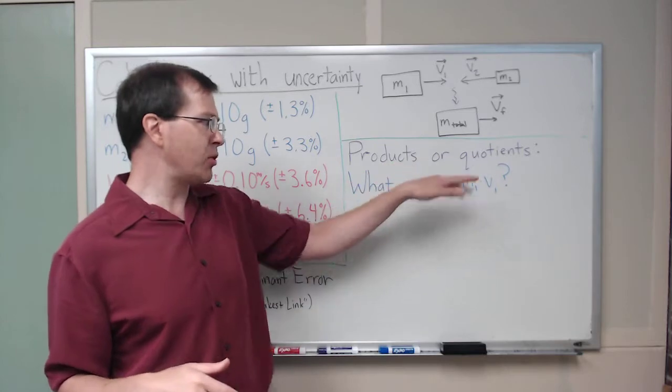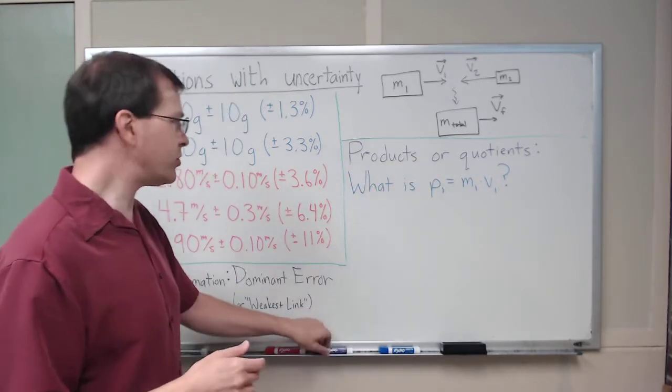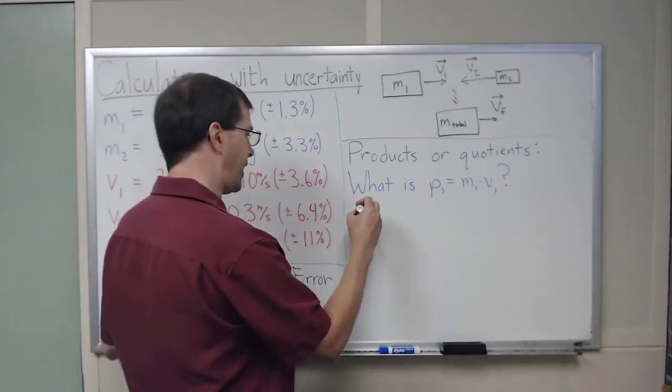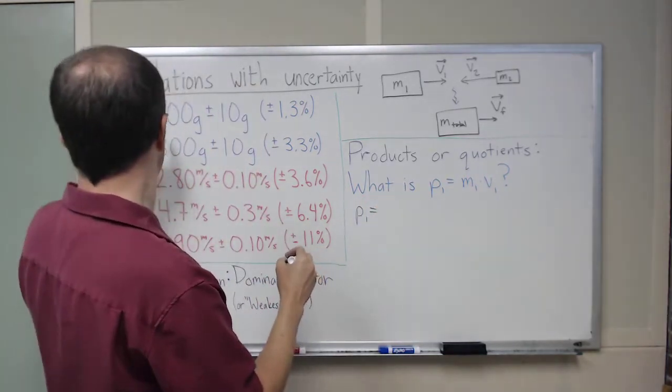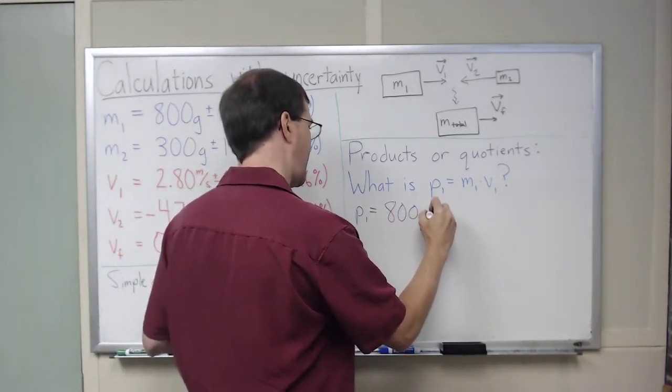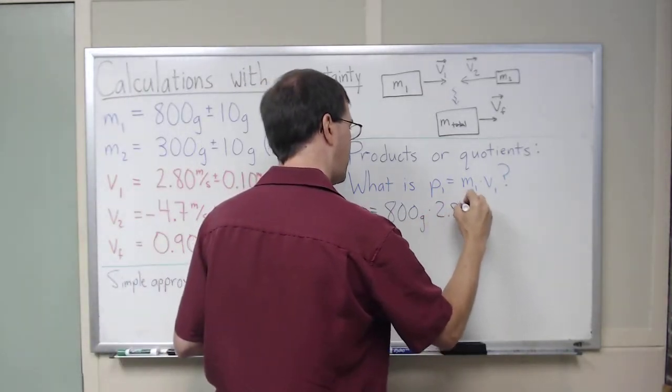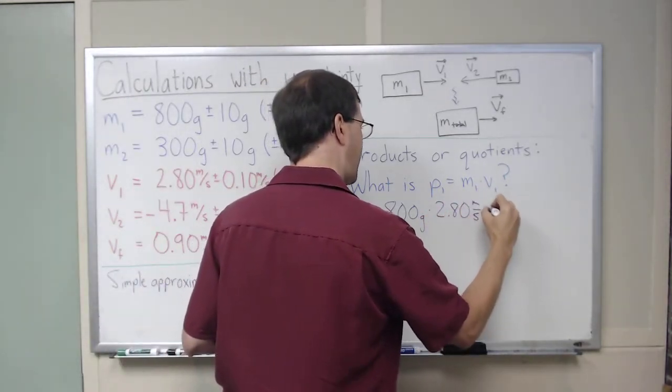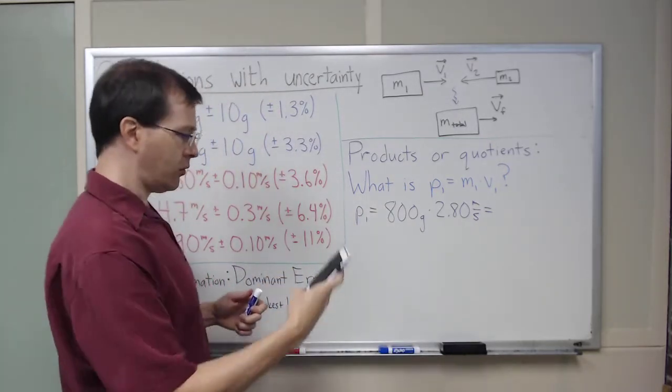It's the same either way. If there's m divided by v, it'll be the same process. For this, we can do the calculation. We find that momentum 1 is equal to mass 1, which is 800 grams, times v1, which is 2.80 meters per second. When I put that together, I keep forgetting to grab a calculator.